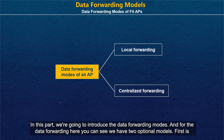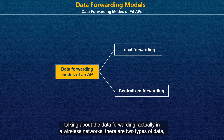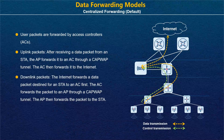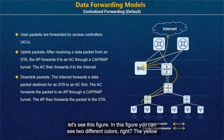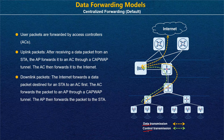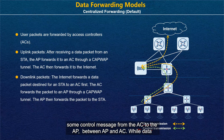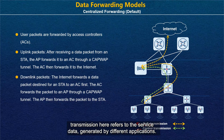In this part we are going to introduce data forwarding models. There are two optional models: the first is called local forwarding and the second is called centralized forwarding. In a wireless network there are two types of data — the yellow color represents data transmission (service data from applications), while the green color represents control transmission, such as configuration files or control messages between the AC and AP.